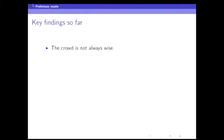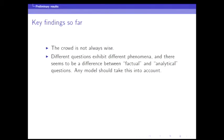One of the key findings: crowds are not always wise. Correct information was not always aggregated by the group even in 10 iterations. One of the interesting things is that there seem to be quite different behaviors between different types of questions. There's a difference between analytical questions — where you can in principle work it out yourself without any influence from anyone — and factual questions where you may have no idea about the information. If you're trying to model the diffusion of beliefs, you probably need to take the type of question into account.